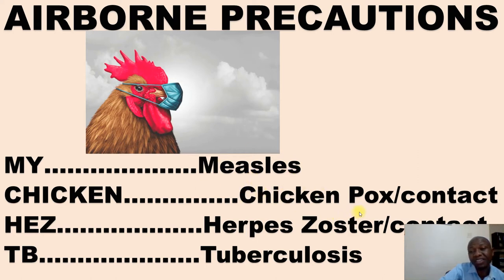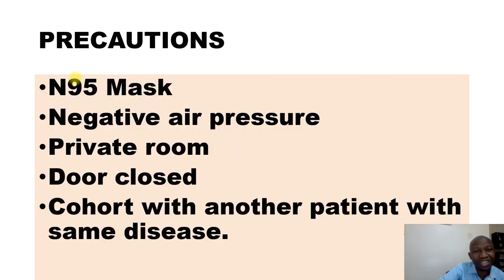For diseases that manifest on the skin, remember to also add contact precautions. The precautions you need to take for airborne diseases include: an N95 mask, negative air pressure private room with the door closed. You can also cohort the patient with another patient with the same disease.